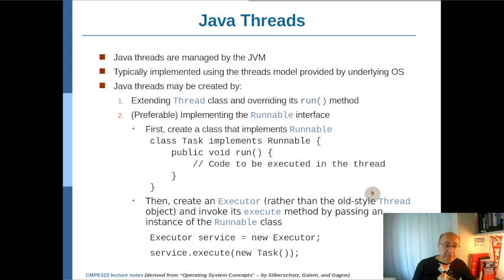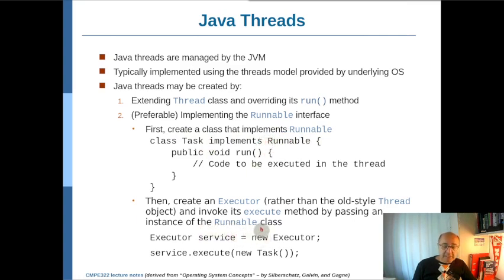But instead, with the newer executor framework, you create an executor and invoke that executor's execute method by passing it an instance of the Runnable class. Since we have created the class Task as implementing the Runnable interface, we first create an executor using new executor and assign it to a variable of type executor, then call its execute method by passing it an object of the class implementing the Runnable interface.